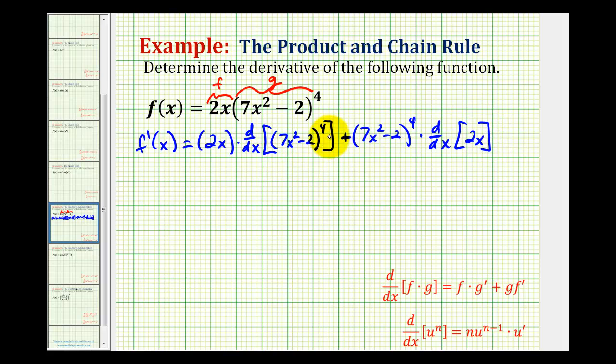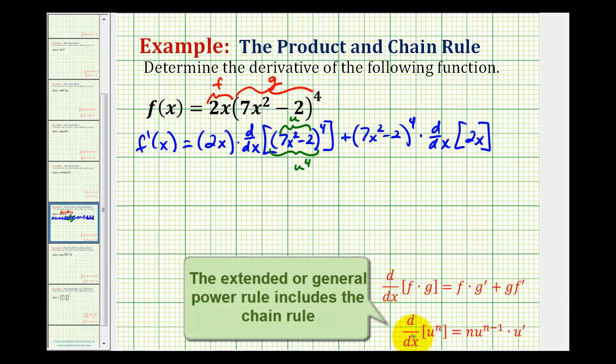So now let's focus on determining this first derivative here. This is a composite function, so we'll let u equal the inner function. So we'll let 7x squared minus 2 equal u, which means this entire function becomes u to the fourth. So to differentiate u to the fourth, we'll differentiate this with respect to u, and then multiply it by u prime, applying the extended power rule given here below.